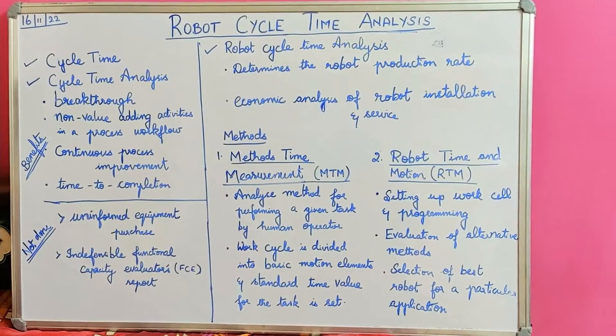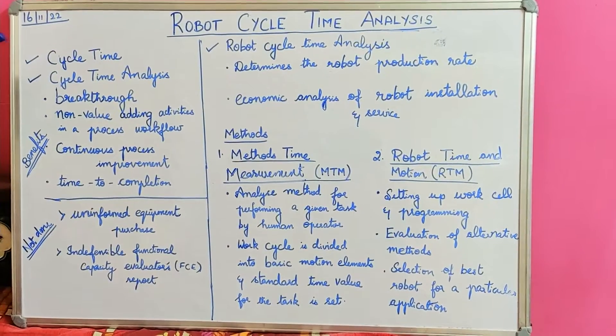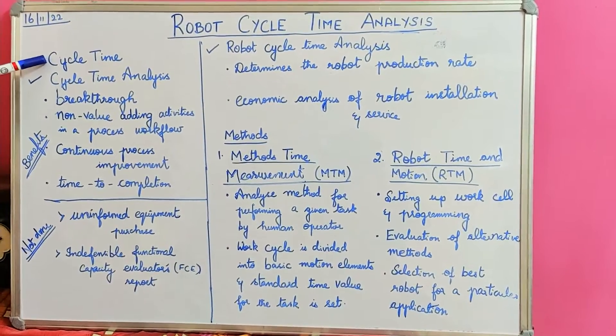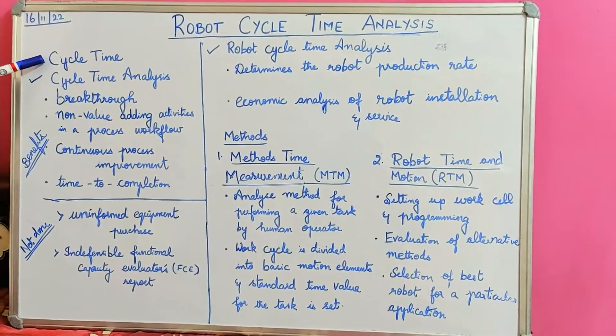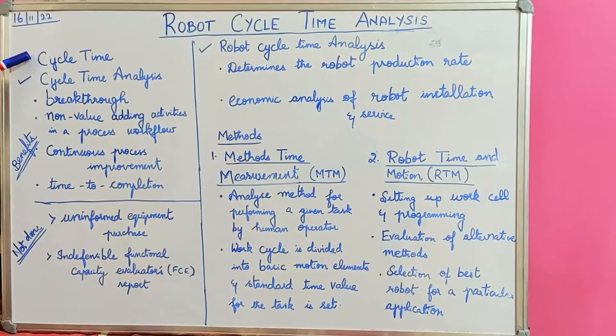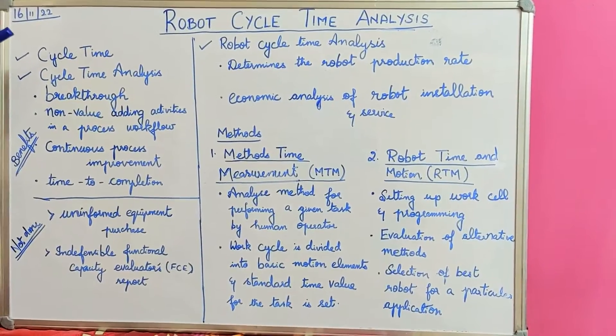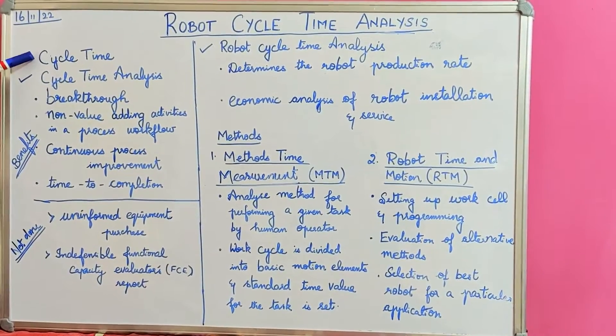Cycle time is a time period required to complete one cycle of operation, or to complete a job, a function, or a task.